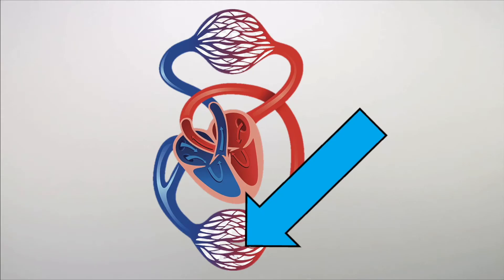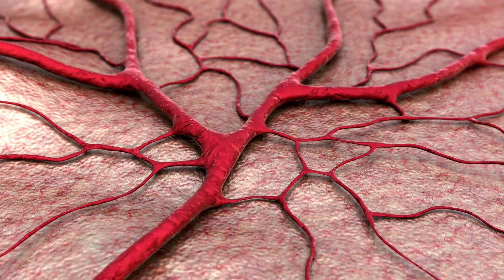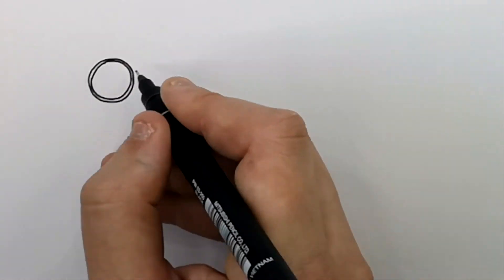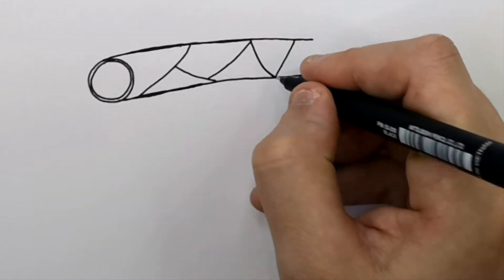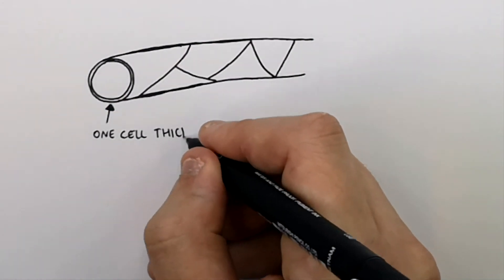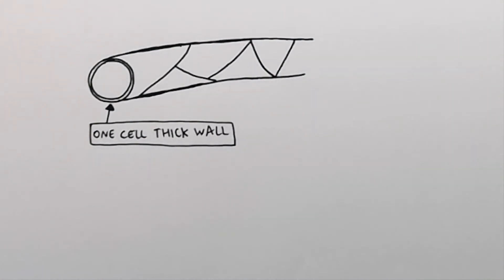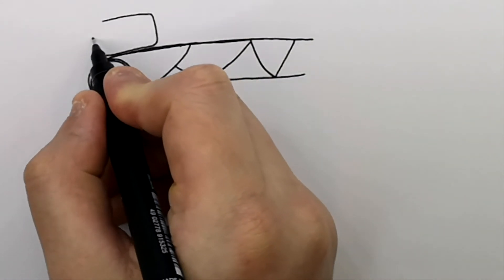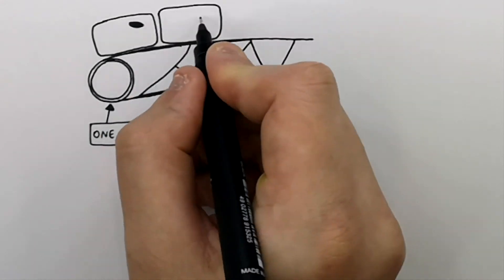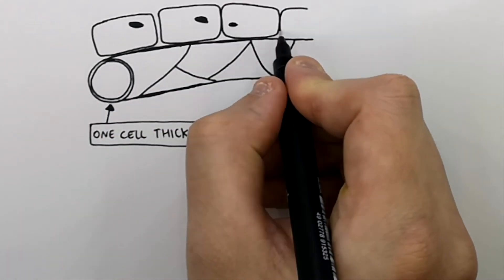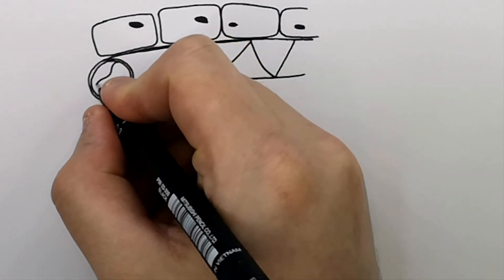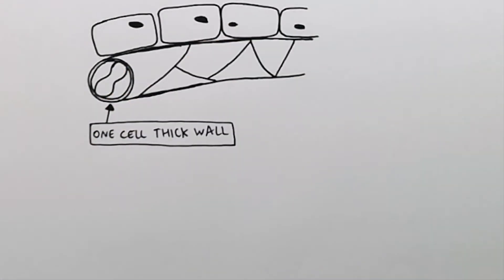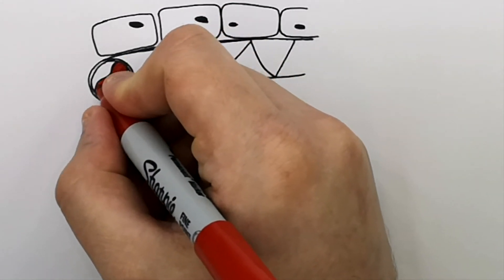These are capillaries — a network of blood vessels that supply cells with oxygen and nutrients and take waste products away. This is what a capillary looks like. The walls of the capillary are one cell thick. The lumen of the capillary is one blood cell wide — this here is one red blood cell — so you can see how narrow the capillaries are.